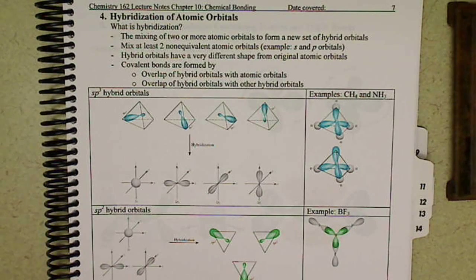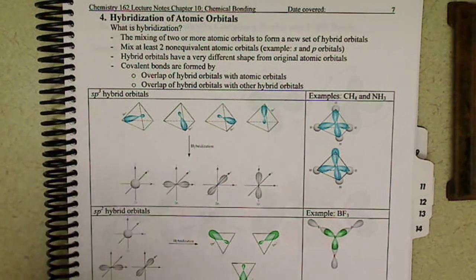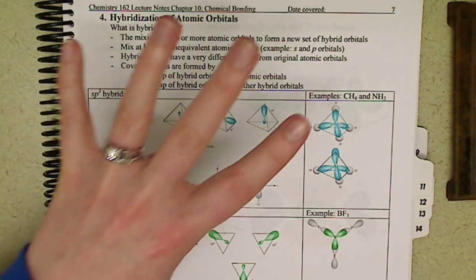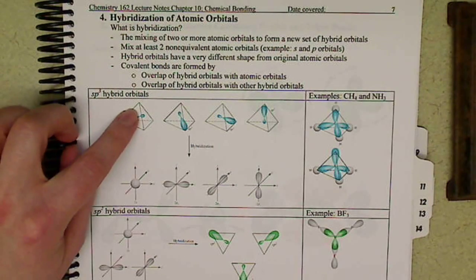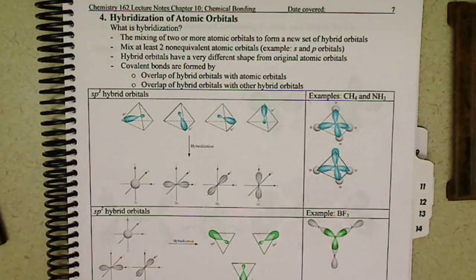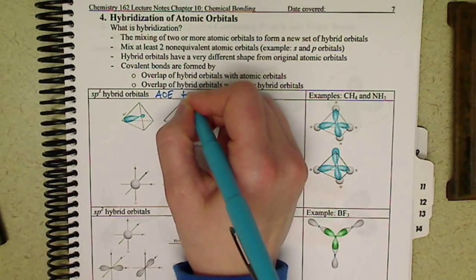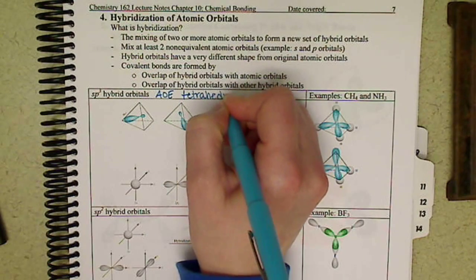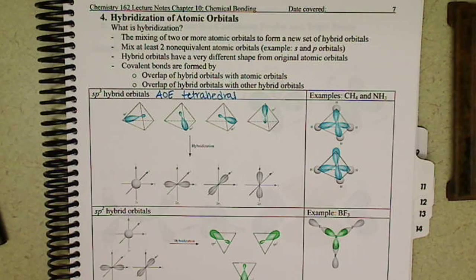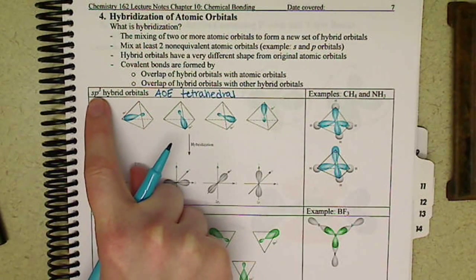So just to kind of complete our picture, for SP3, we're taking four orbitals, four atomic orbitals, therefore we get four hybrid orbitals, and we get four areas of electrons. When we have four areas of electrons, that corresponds to tetrahedral. So any central atom that has tetrahedral shape, it's going to have SP3 hybridization.